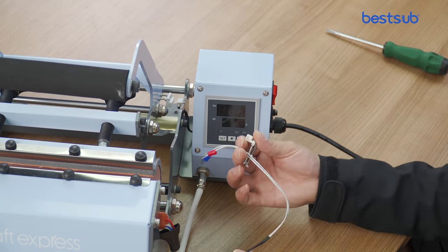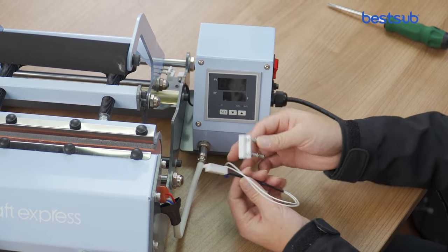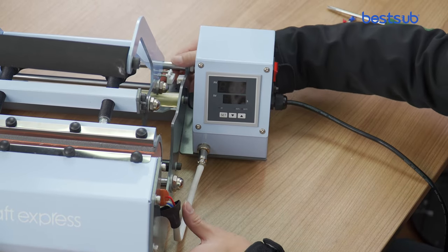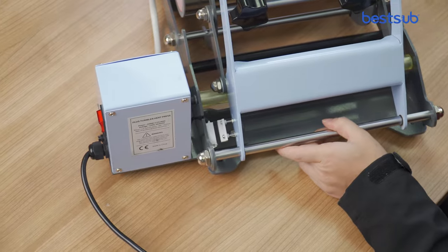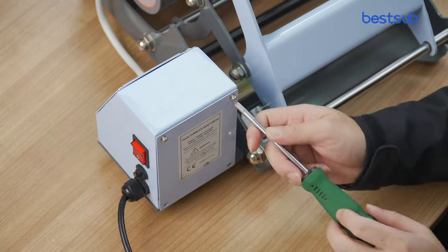Now let's see how to replace the magnetic reed switch. Reed part and magnetic part. First, unscrew both sides of the panel screws.